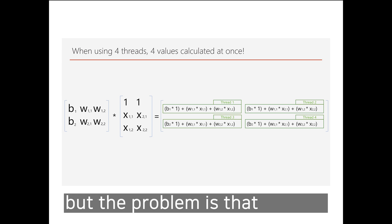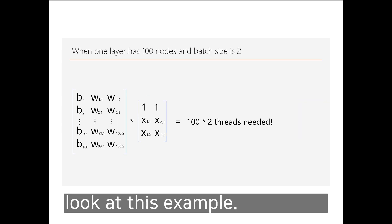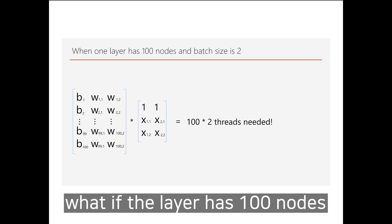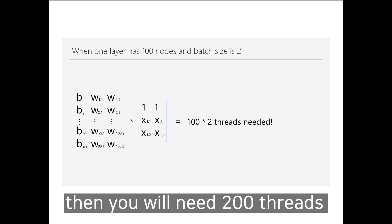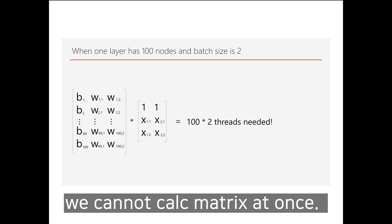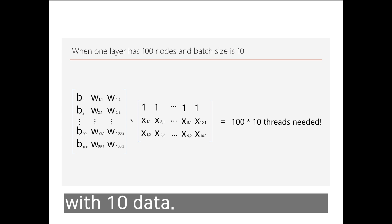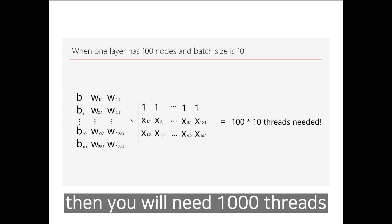The problem is that normally a deep learning model is much deeper and larger than this simple example. Look at this: what if one layer has 100 nodes? Then you will need 200 threads. Since the CPU has only 24 threads, you cannot calculate the matrix all at once. And what if you run a mini-batch with 10 data samples? Then you will need 1,000 threads.